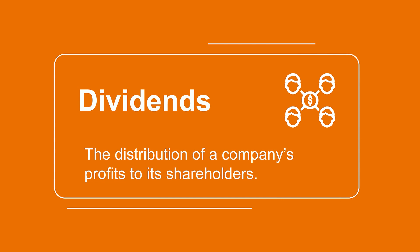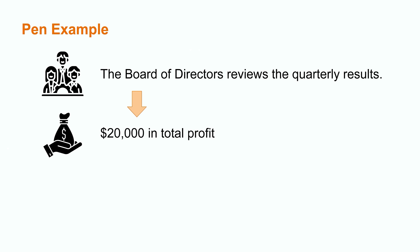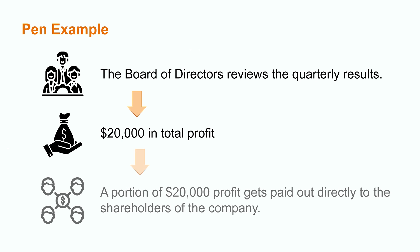This is where dividends enter the equation. Dividends are the distribution of a company's profits to its shareholders. In our example, the board of directors of our pen company would review the results for the quarter and decide whether to declare dividends. The dividend payments would come out of the profits the company has earned over time. Essentially, a portion of that $20,000 profit would get paid out directly to the shareholders of the company.